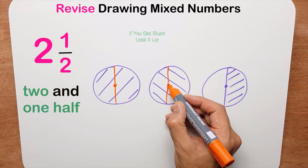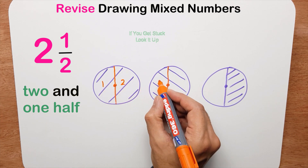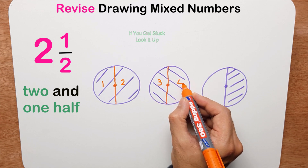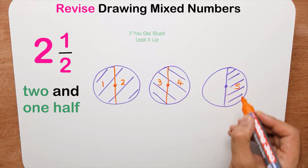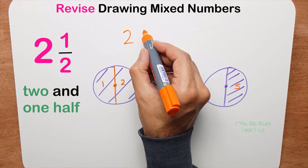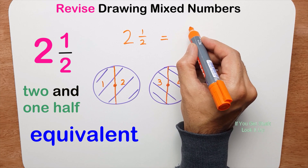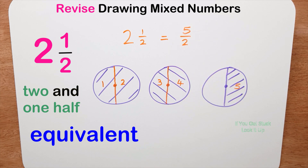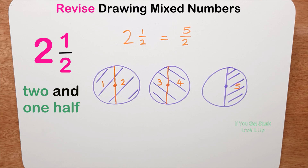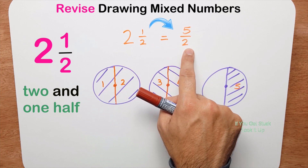So now I have one, two, three, four and five halves. So I can say two and a half is equal to or equivalent to five halves. That's the end of this video. In the next video we hope to look at how to turn a mixed number straight into an improper fraction.